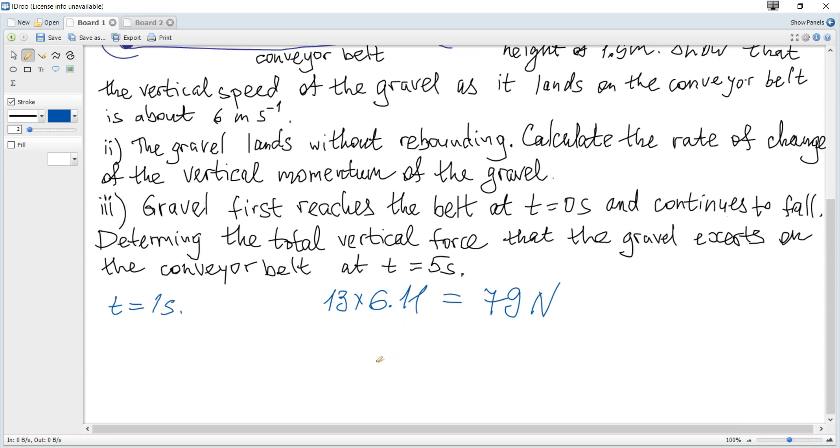Gravel first reaches the belt at zero seconds and continues to fall. Determine the total vertical force that the gravel exerts on the conveyor belt at five seconds. During five seconds, total mass collected is 13 multiplied by 5, which is 65 kg. If we multiply by 9.8, we get 637 newtons.